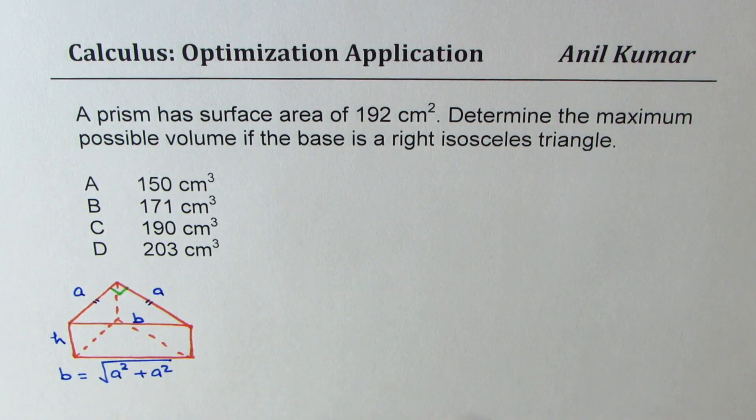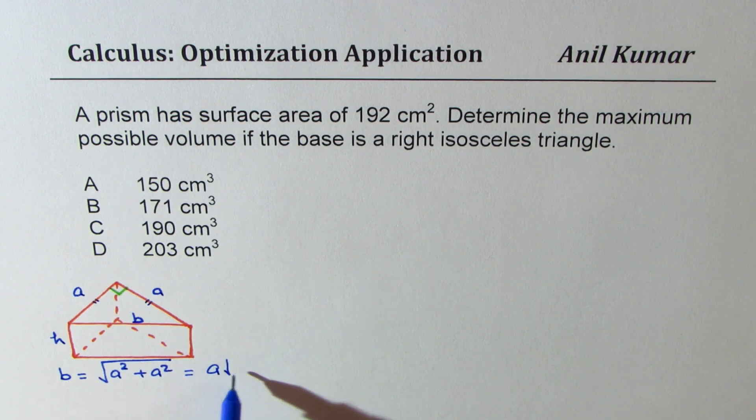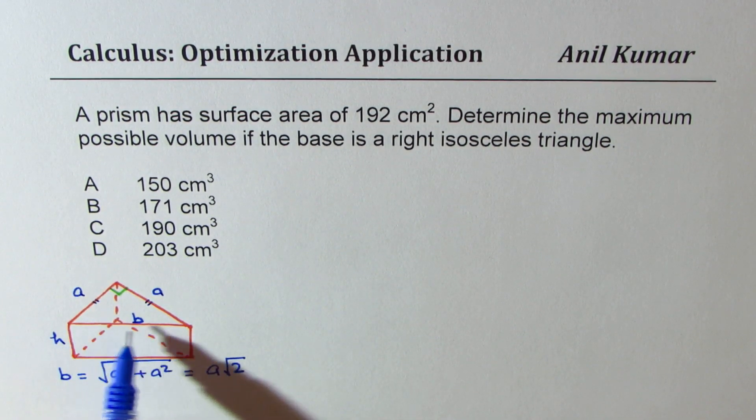So that gives us the side as 2a square or we could write this as a square root 2. So that becomes this length.